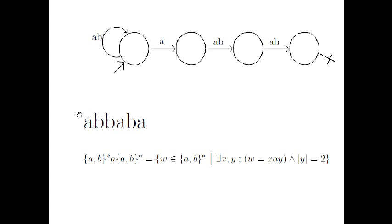Another option would be to read the first A and stay in the first state, read a B and stay, read B and stay, read A and stay, read B and stay, and read the last A and jump to the second state. Since it is a rejecting state, this is a rejecting execution again.